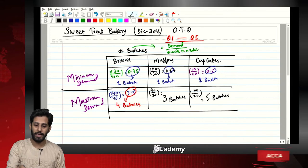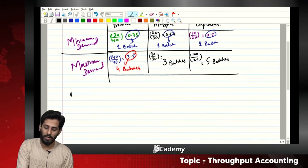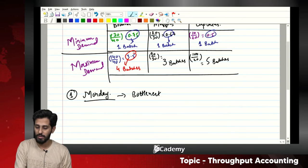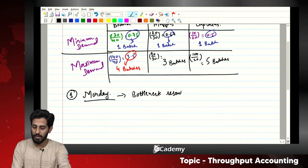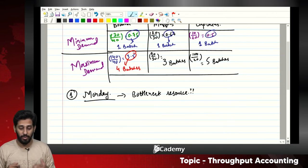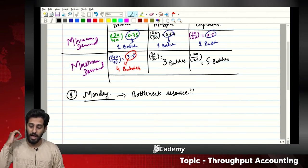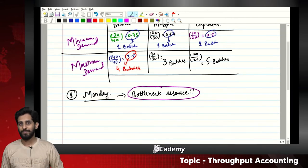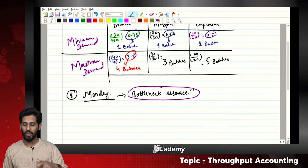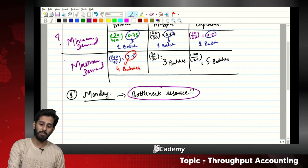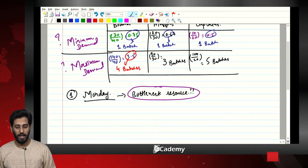Now solving question one: on Monday, we need to identify the bottleneck resource. The bottleneck is any resource due to the shortage of which we cannot produce the maximum demand. It is about the maximum demand — not the minimum.